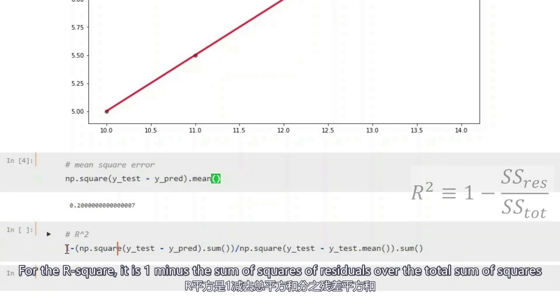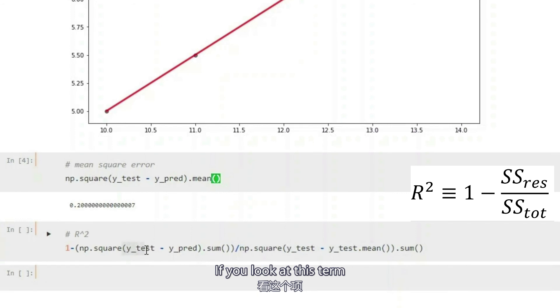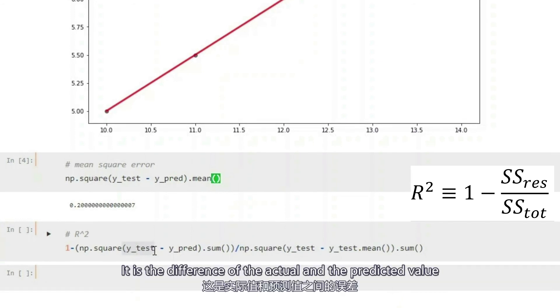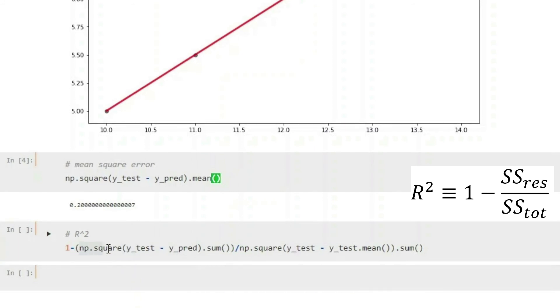For the r squared, it is 1 minus the sum of squares of residuals over the total sum of squares. And if you look at this term, it is just the difference of the actual and the predicted value.